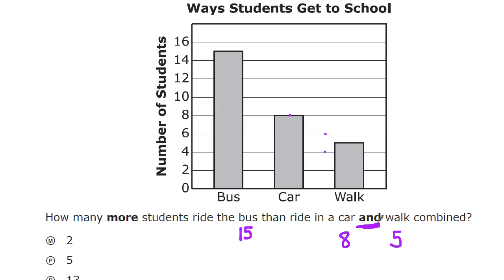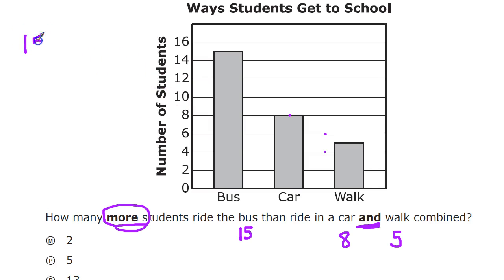The easy mistake here is to just say: more students ride the bus than the car, so do fifteen minus eight and you're done. But no — you have to combine car and walk first. We want to find what's left over, so we subtract the combined total from the bus amount: fifteen minus eight plus five. Eight plus five equals thirteen.